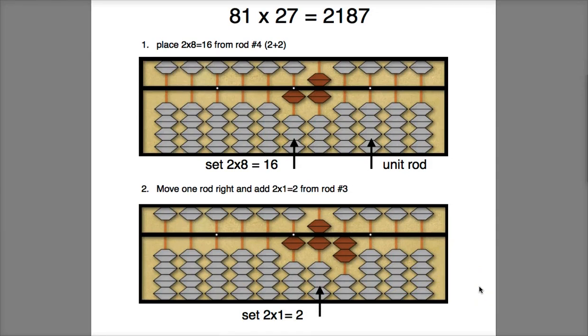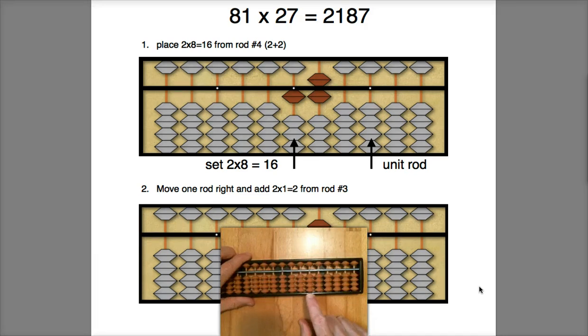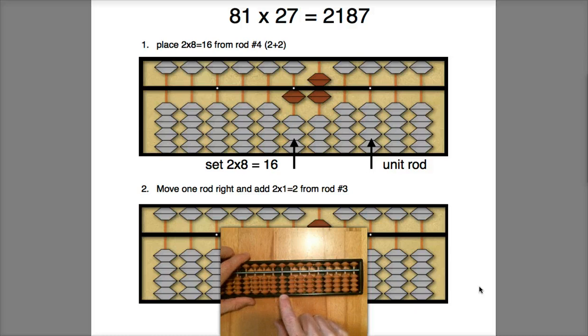We'll take a look at this problem: 81 times 27. So I'm going to choose this as my unit rod, and then I need to count off four because I have four digits in my problem—one, two, three, four—so here's my starting location.